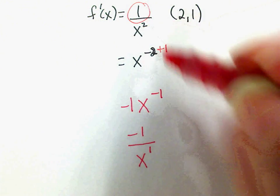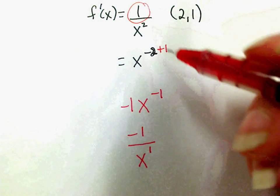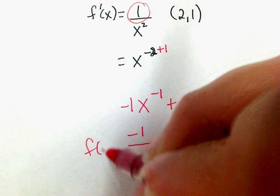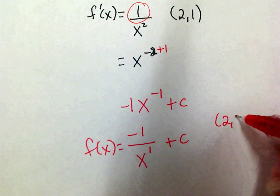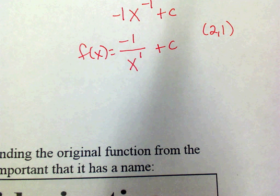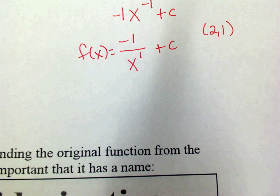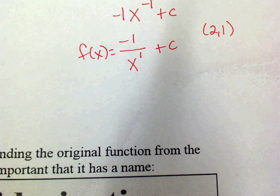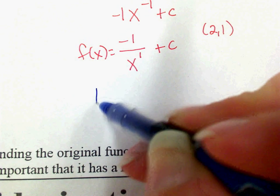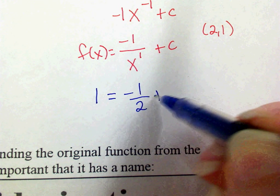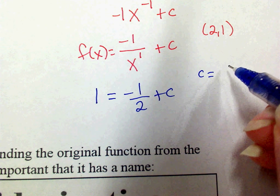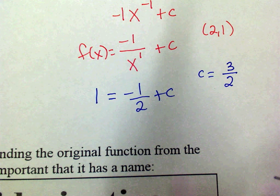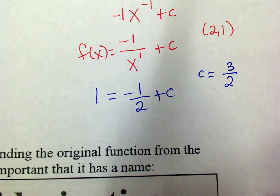So f of x equals this, and then I've got to remember that I'm going through the point 2, 1. So f of x equals negative 1 over x plus c. What do I do? Plug them in? All right. What is y? What is f of x? 1, negative 1 over 2 plus c. So what's c? It's 3 over 2. Final answer: f of x equals negative 1 over x plus 3 over 2. And there you go.